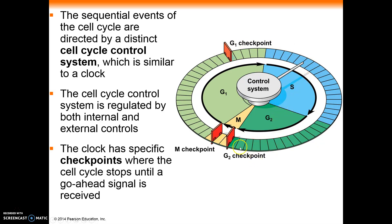We also see a checkpoint at the end of G2, marking a barrier before you can move into mitosis. This is important because you don't want to divide if you haven't replicated your DNA correctly. G2 is all about checking the DNA, making sure everything was done correctly, and fixing any mistakes. There is also a final checkpoint that will halt mitosis and prevent the cells from going through the final steps of cytokinesis.